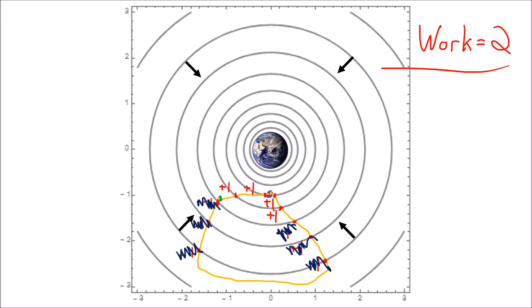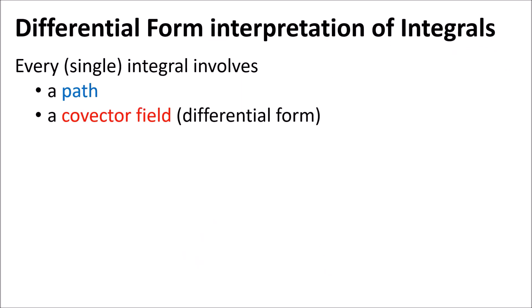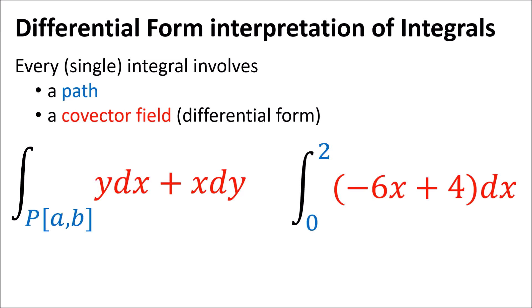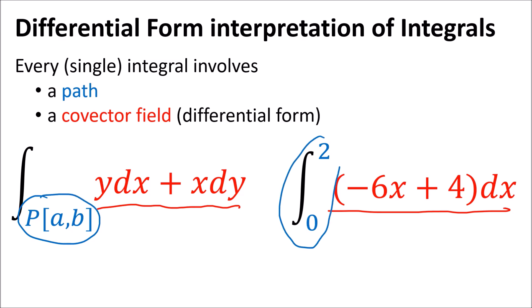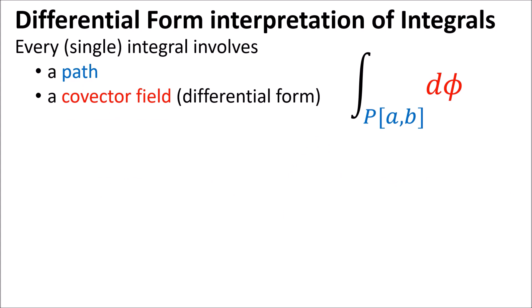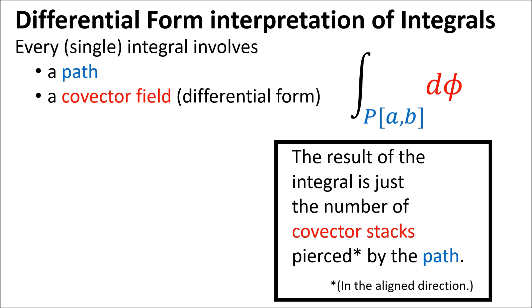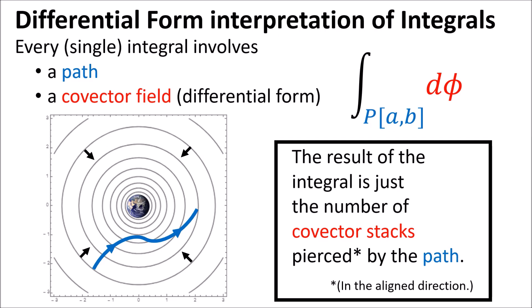This is a pretty general idea that works for all integrals. Every single integral involves a path and a covector field, also called a differential form. In these two examples of integrals, the red parts are the covector fields and the paths are given by the endpoints. The differential form interpretation tells us that the result of an integral is just the number of covector stacks pierced by the path — with plus one when the covector direction aligns with the path, and minus one when they are opposed. What's really nice about this interpretation is that it doesn't depend on coordinate systems at all — whether Cartesian or polar, the answer is always the same.